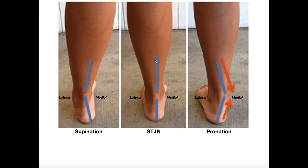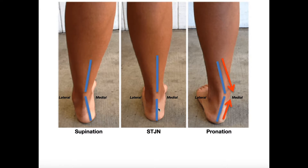Now let's define these composite movements with a surface anatomy view. In each of these pictures, we're actually seeing a left ankle from the posterior view. We need to define STJN — subtalar joint neutral — which is really just the neutral state of the subtalar joint. Looking at the posterior aspect of a person's left ankle and foot, what you do to determine if somebody is in subtalar joint neutral is draw the midline of their calf, and then another line representing the midline of the calcaneus. If the person is in subtalar joint neutral, those two lines should be parallel to one another.